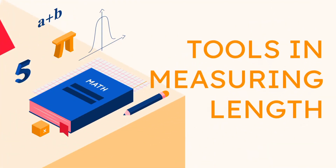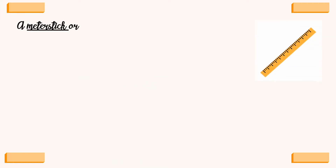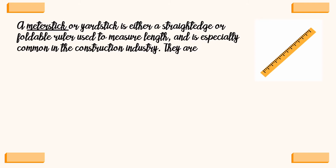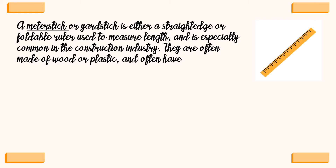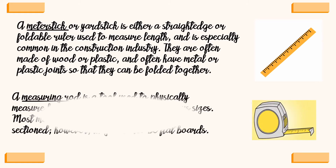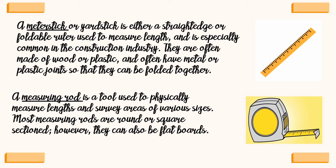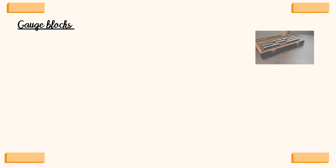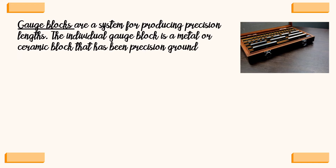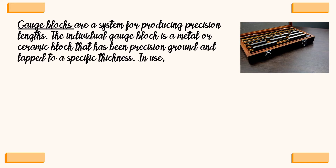Now, let us start with tools you would use to measure length or the distance between two points. A meter stick or yard stick is either a straight edge or foldable ruler used to measure length, and is especially common in the construction industry. They are often made of wood or plastic and often have metal or plastic joints so that they can be folded together. A measuring rod is a tool used to physically measure lengths and survey areas of various sizes. Most measuring rods are round or square sectioned; however, they can also be flat boards.